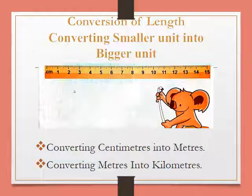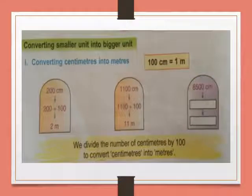Centimetre is smaller, metre is bigger — that is, smaller unit into bigger unit. First we will see how to convert centimetres into metres. Before that, let's revise. What is 1 metre? 1 metre equals 100 centimetres. We all are aware.